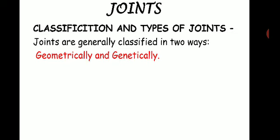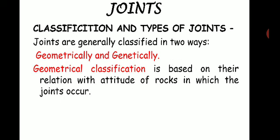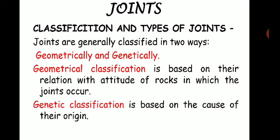Joints are generally classified in two ways: geometric classification and genetic classification. Geometric classification is based on the relation with the attitude of the rocks in which the joints occur. Genetic classification is based on what is the cause for the origin or formation of that joint. Let us discuss both the geometric and genetic classification of joints.